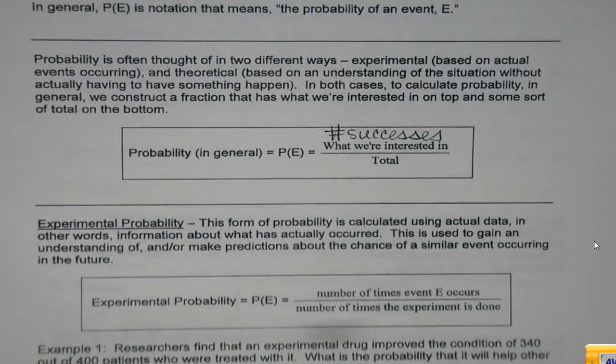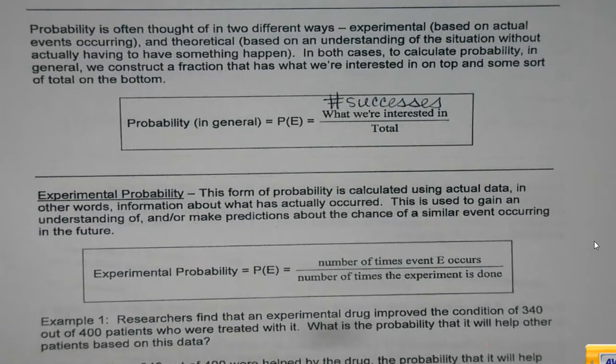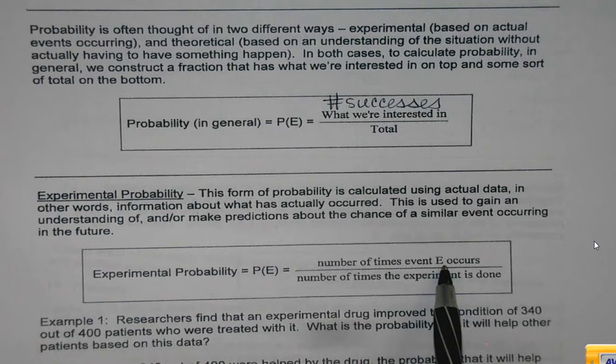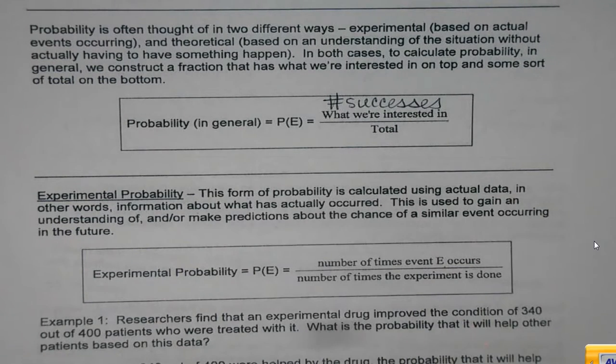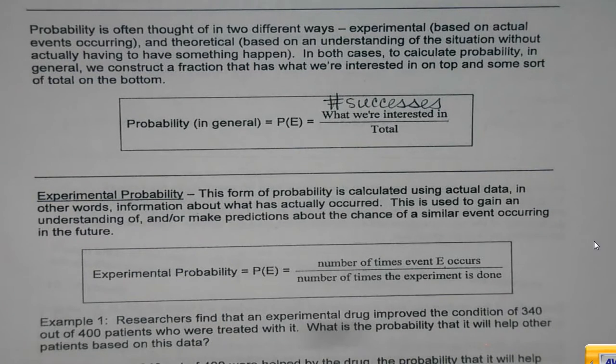If I'm going to be calculating probability experimentally, I'm actually going to do a physical activity to get some values. So the number of times I get what I want, I spun a 6, I rolled a 3, whatever it is, goes on top. Again, my successes. And then the number of times I did the experiment goes on the bottom. Same formula, just stated a little bit differently.